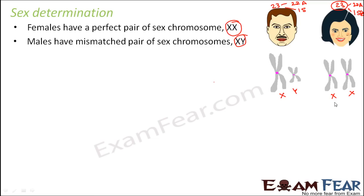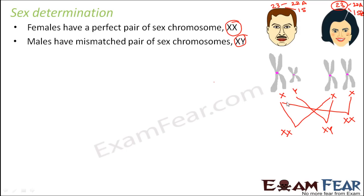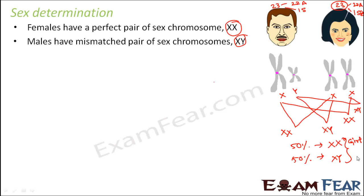When the fusion happens, these two will combine. So what are the possibilities? The father can donate either X or Y, but the mother will always donate X. If the father donates X, then X combines with X — what will be formed? XX. If the father donates Y but the mother donates X, it will be XY. So there is a 50% possibility that the baby will have XX and a 50% possibility that the baby will have XY. If it is XX, that means it is a baby girl; if it is XY, that means it is a baby boy.